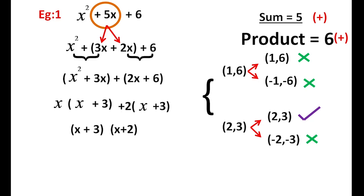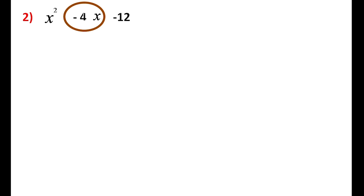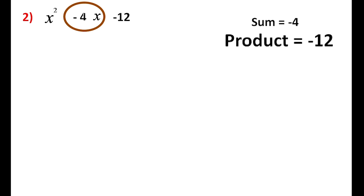In example 1, x² + 5x + 6, both sum and product were positive. Next example is x² - 4x - 12, where both sum and product are negative. Here the middle term is -4x, so sum is -4 (negative) and product is -12 (also negative). The product without sign is 12, so we factorize 12: factors are 1 and 12, then 2 and 6, then 3 and 4.